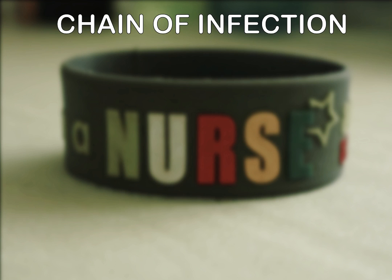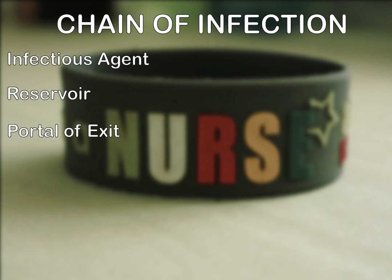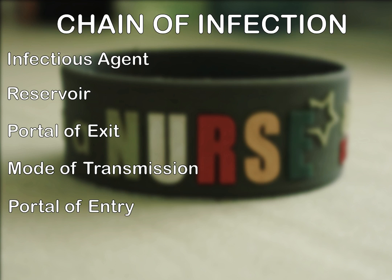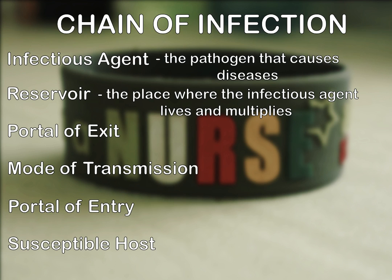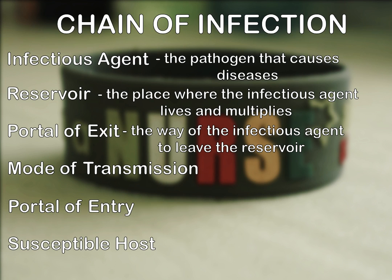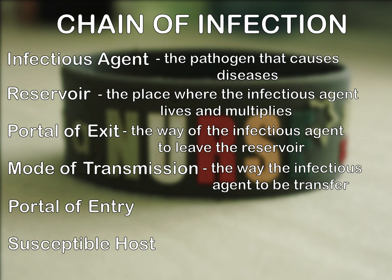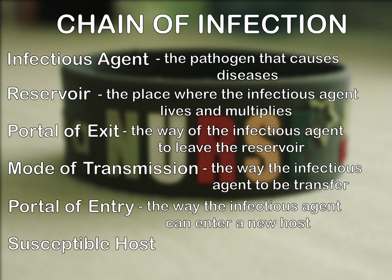Under the chain of infection, we have the following: infectious agent, reservoir, portal of exit, mode of transmission, portal of entry, and susceptible host. While discussing these, we'll just focus on the coronavirus. Infectious agent is the pathogen that causes diseases. Reservoir is the place where the infectious agent lives and multiplies. Portal of exit is the way of the infectious agent to leave the reservoir. Mode of transmission is the way of the infectious agent to be transferred.